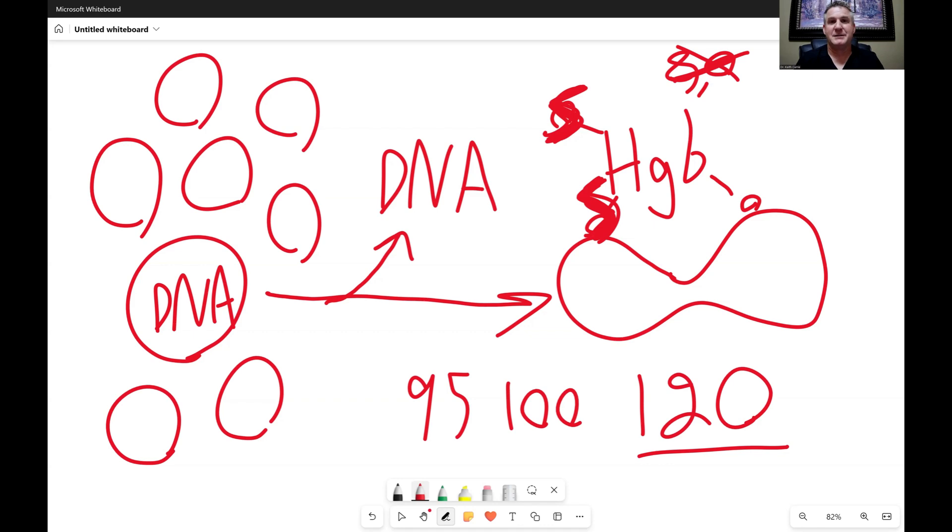Well, what happens with A1C is you have to wait that 95, 100, 110, 120 days for the mature red blood cells that have all the sugar stuck to them. You have to wait for those to die off.